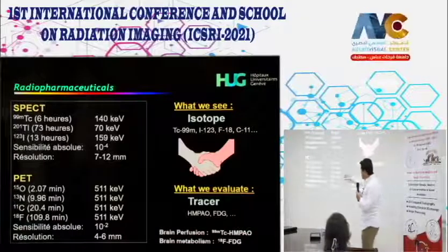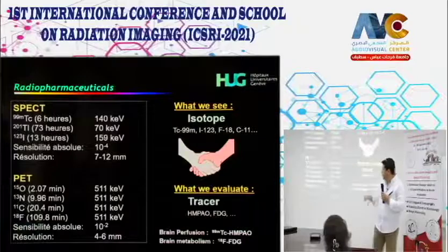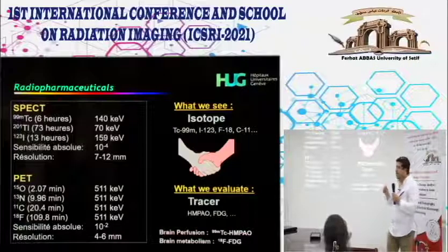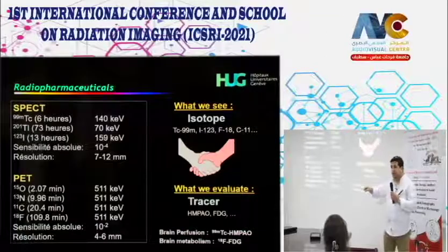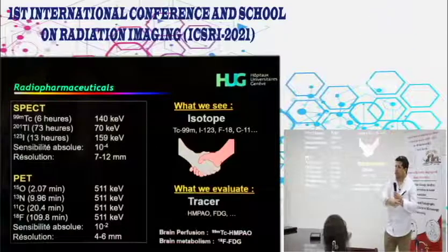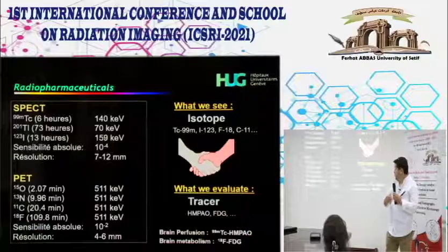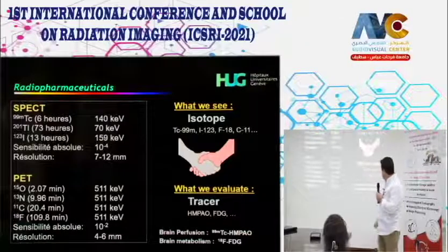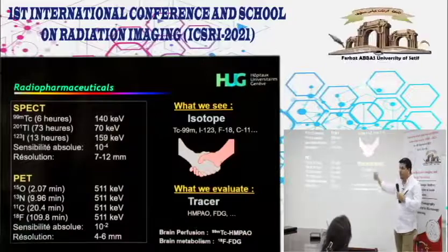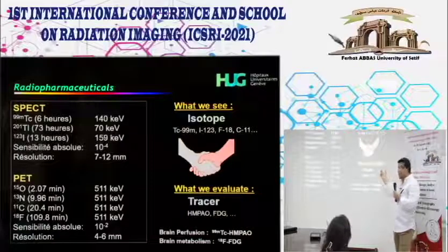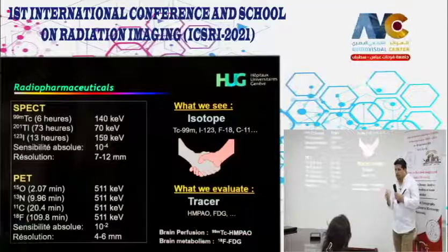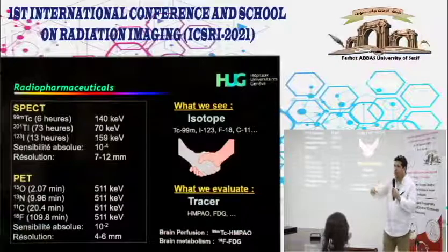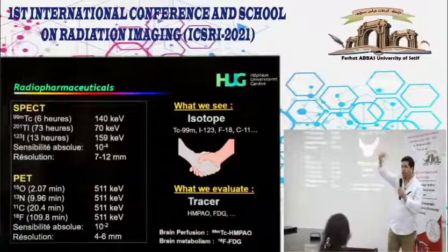PET tracers have extremely short half-lives—oxygen-15 is only 2 minutes. You must produce the tracer in a cyclotron, inject the patient very quickly, scan immediately, and acquire the signal. The radionuclide is attached to a biological molecule that reflects the metabolic behavior of interest within the patient's body.